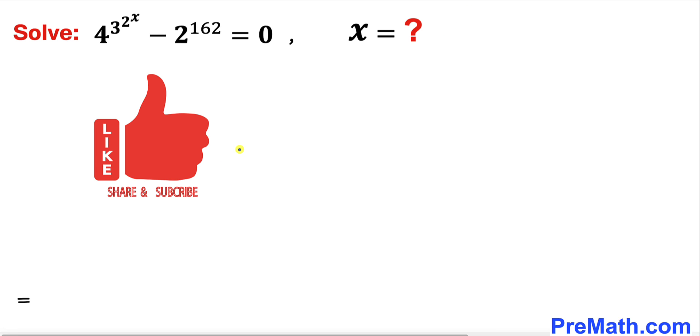Please don't forget to give a thumbs up and subscribe. Let's get started with the solution. First, I'm going to move 2^162 to the other side, so this equation becomes 4^(3^(2^x)) = 2^162.